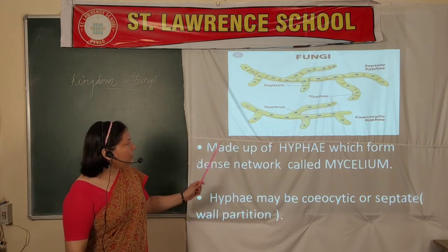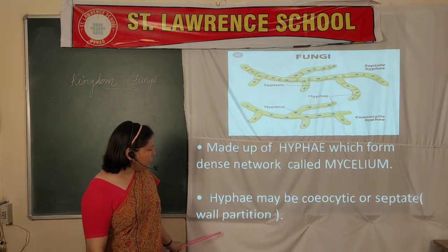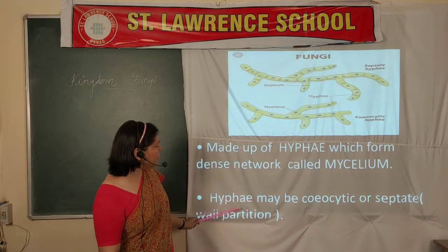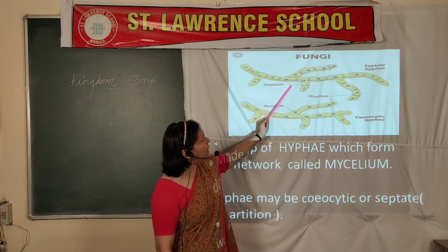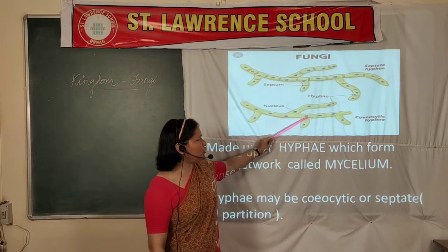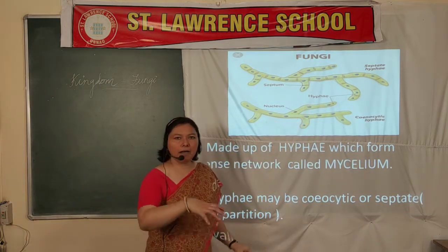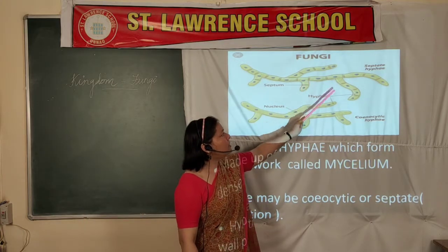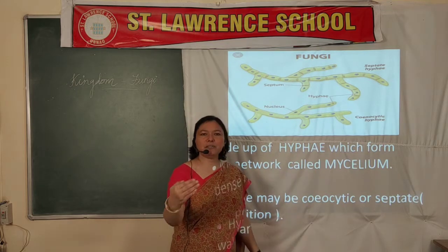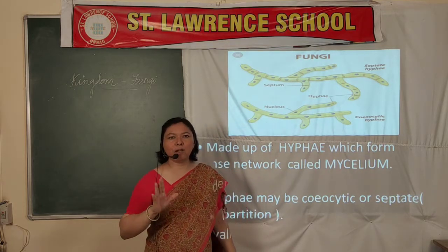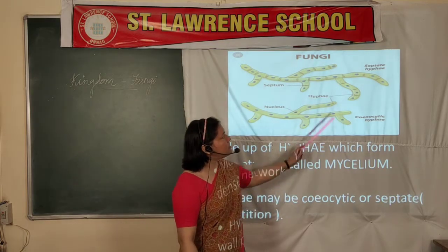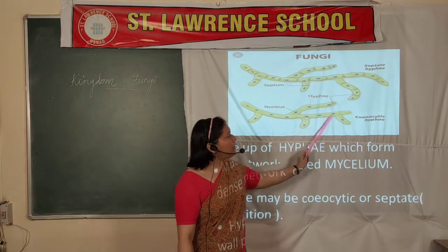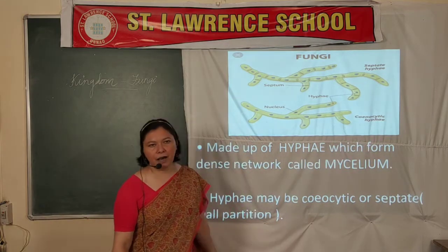Hyphae may be synocytic or septate. In synocytic hyphae, there is no wall partition, so all nuclei are free in the cytoplasm. In septate hyphae, there is wall formation and within each limited wall section there is only one nucleus. Septate means wall formation, and synocytic refers to hyphae without such partitions.